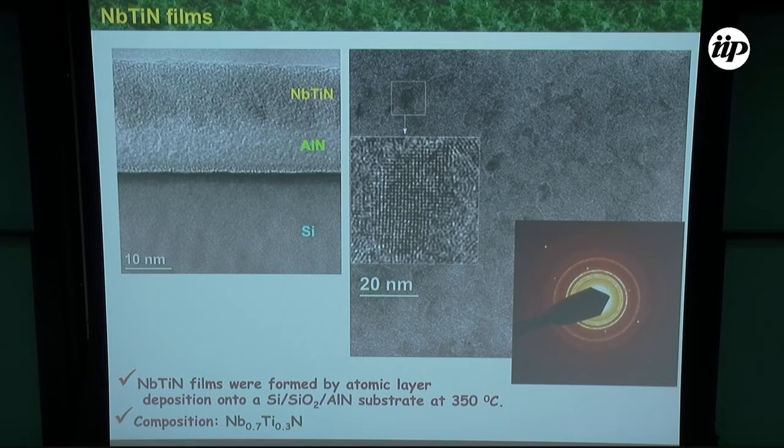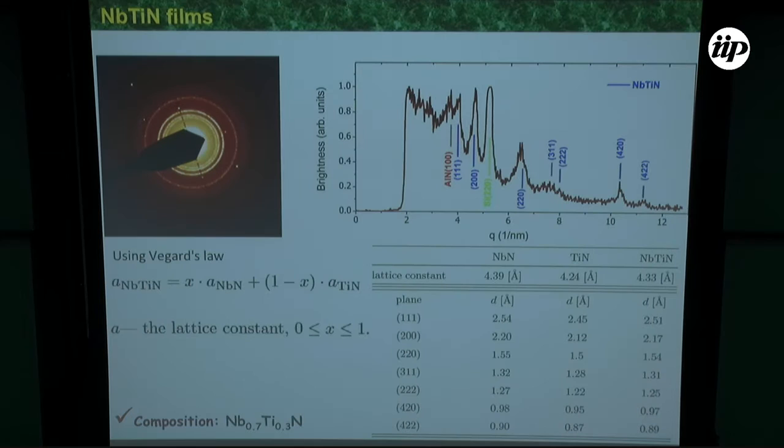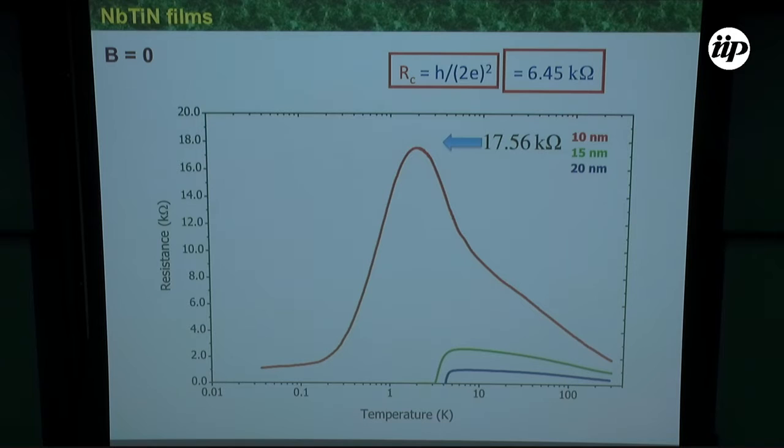Niobium-titanium-nitride films. We have investigated structures, polycrystalline, formed by atomic layer deposition technique. We know everything about this material. We investigated carefully the stoichiometric composition of this film. We know all distances. They are polycrystalline with NbTiN ratio.